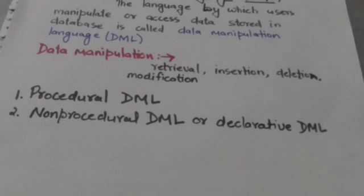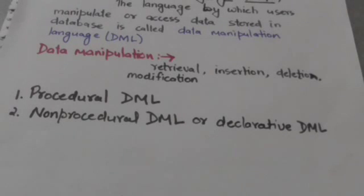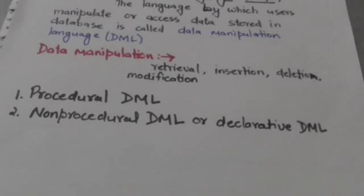There are two types of data manipulation languages. The first is procedural DML. In procedural DML, the user is needed to specify what data are needed, without specifying how to get those data.